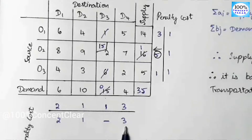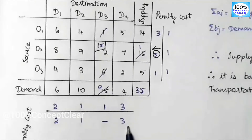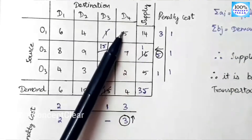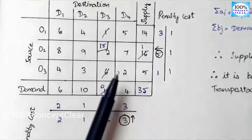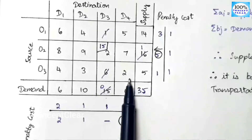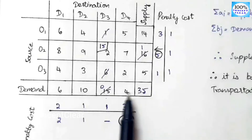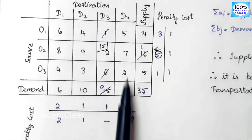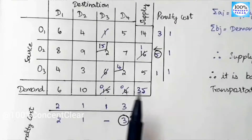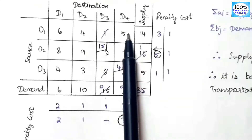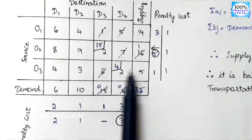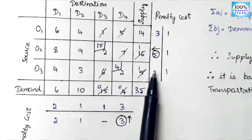The highest penalty value is 3, which represents column D4. We allocate the least cost in D4. We compare supply (5) and demand (4): the least value is 4, so we allocate 4 to that cell. We cancel D4. The remaining supply is 5−4 = 1.